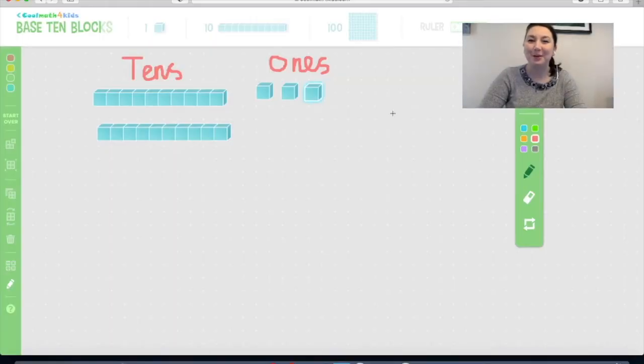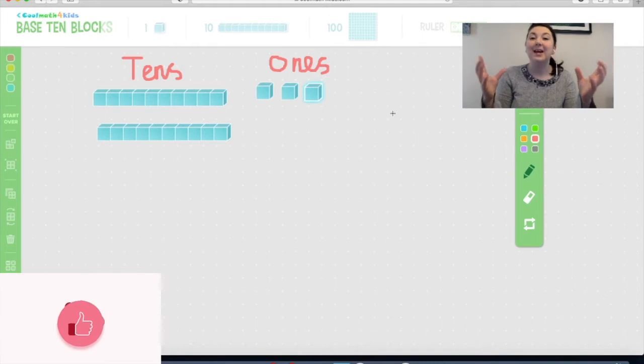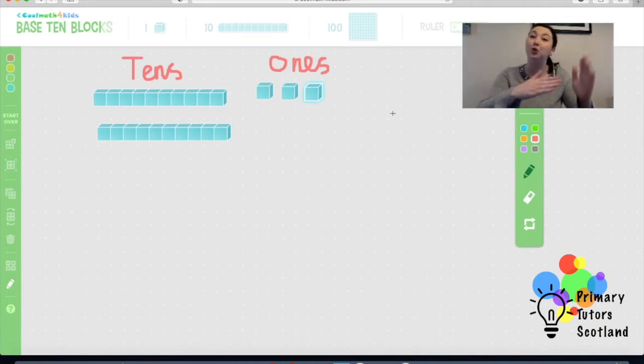Hi there and welcome back to Primary Tutors Scotland. Today we are going to be looking at partitioning. So partitioning or splitting is when you split a number into their tens or their ones or their hundreds, tens and ones, or their thousands, tens and ones, whatever it is. It's into their place value groups.